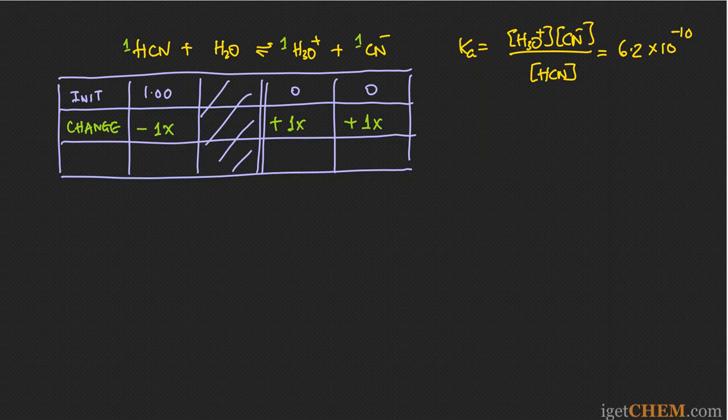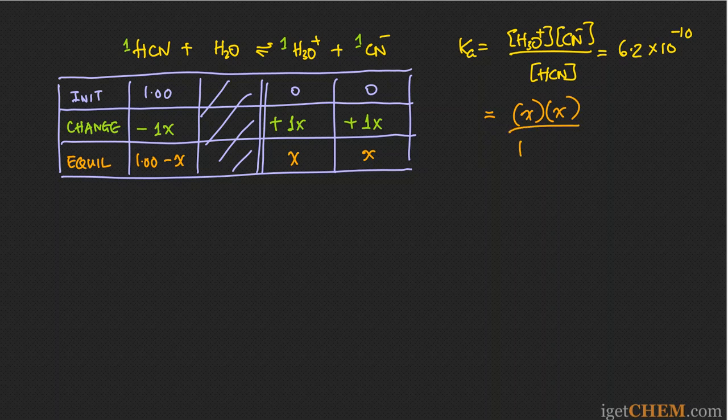And finally, we can apply the change to the initial to get the equilibrium value in terms of this unknown x. So this is 1 minus x, x, and x. So fairly straightforward. We can now put those back into the equation, x for H3O plus, x for CN minus, and 1.00 minus x for HCN.